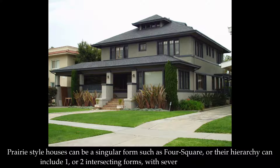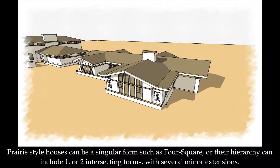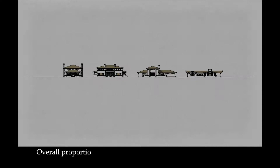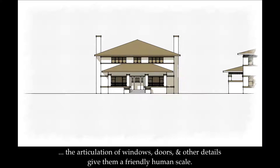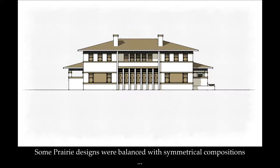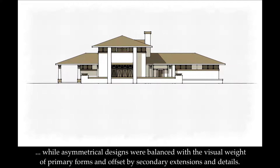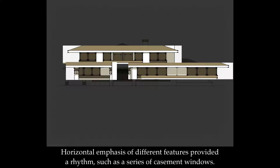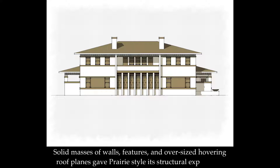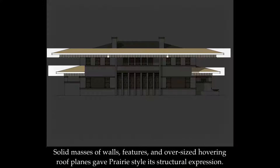Prairie style houses can be singular form, such as a foursquare, or their hierarchy can include one or two intersecting forms with several minor extensions. Overall proportions appear bold and commanding on prairie homes; however, the articulation of windows, doors, and other details give them a friendly human scale. Some prairie designs were balanced with symmetricals, while asymmetrical designs were balanced with the visual weight of primary forms and offset by secondary extensions and details. Horizontal emphasis of different features provided a rhythm, such as a series of casement windows. Solid masses of walls, features, and oversized hovering roof planes gave prairie style its structural expression.